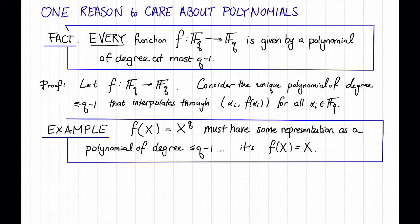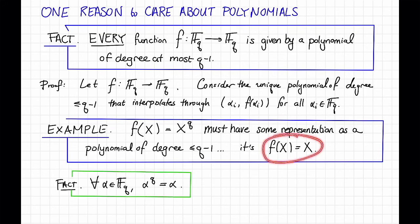The reason for this is another useful fact, which is that for all alpha in f_q, alpha^q is just equal to itself. So that implies that this polynomial has exactly the same evaluations as this polynomial. As for why this fact is true, well, it's a fun exercise to try to prove it yourself, or you can check out an algebra textbook.